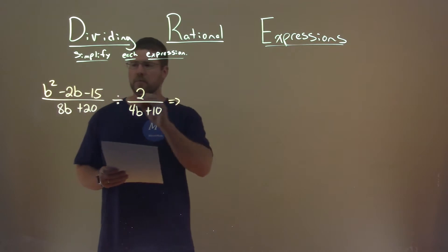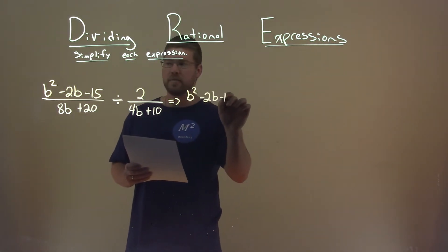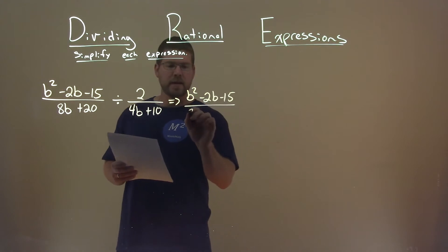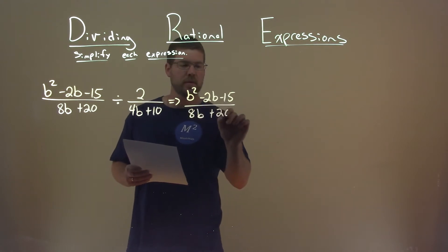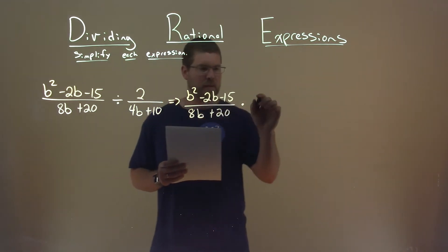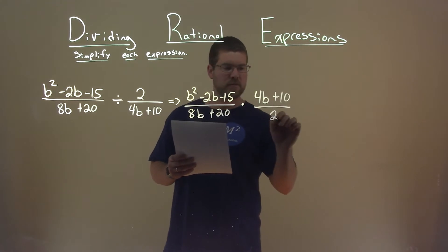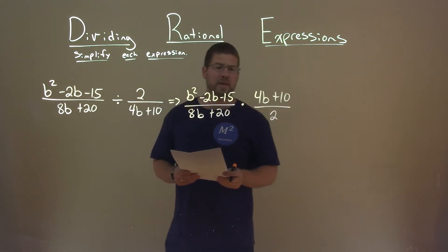The first thing I'm going to do is rewrite the first half, the b squared minus 2b minus 15 over 8b plus 20. But instead of dividing, I'm going to multiply, and I'm flipping the fraction. That's the same thing. So 4b plus 10 over 2. This makes it easier for me to cancel some stuff out.